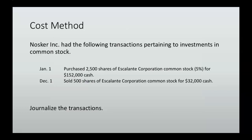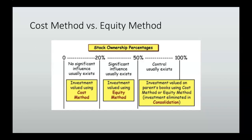Let's take a look at this example. Nosker Inc. had the following transactions pertaining to investments in common stock. On January 1st they purchased 2,500 shares of Escalante Corporation common stock, which is 5% of that business, for $152,000 in cash. Then on December 1st they sold 500 of those shares for $32,000. We know it's the cost method because of that 5% ownership — looking at the chart, 5% falls between 0 and 20, so we use the cost method.